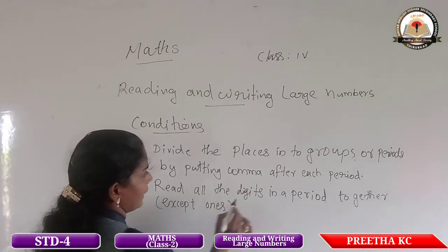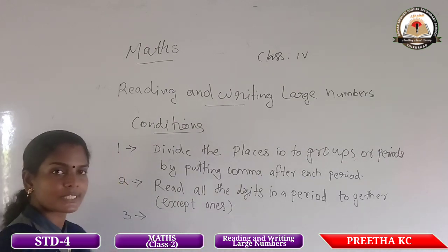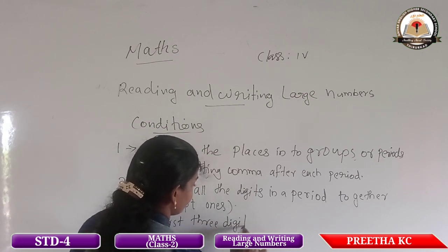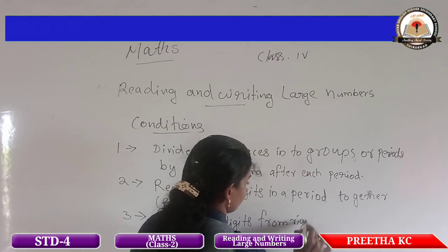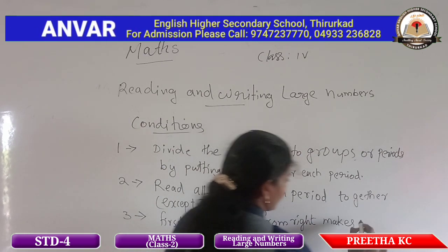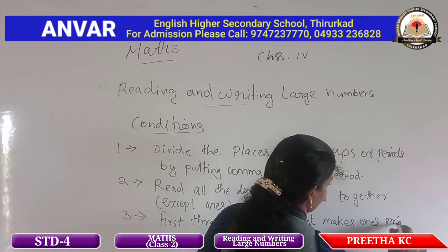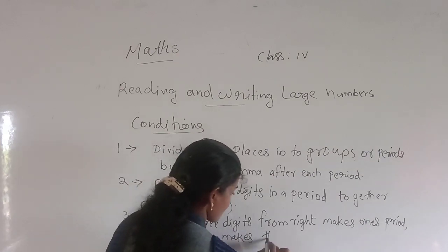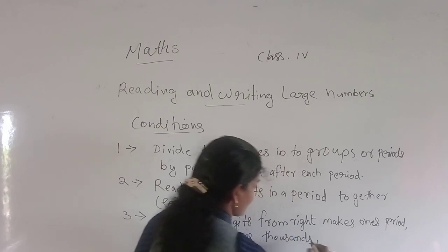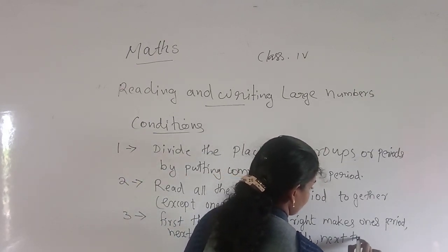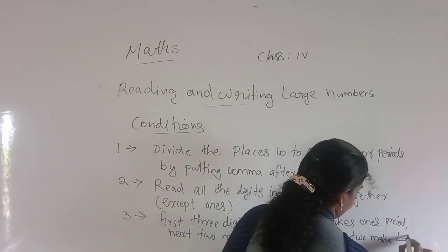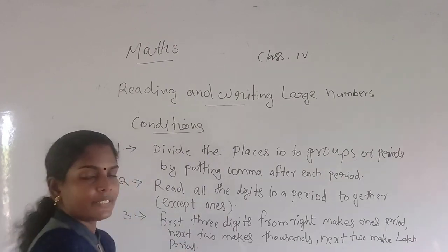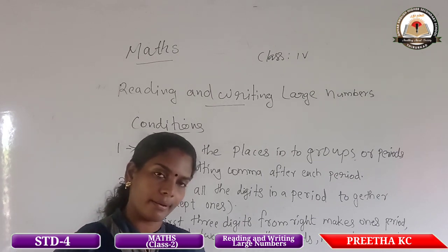The next and last condition is: the first three digits from the right make the ones period. The next two digits make the thousands period. And the next two digits make the lakhs period. These are the three important rules or conditions relating to writing or reading large numbers.